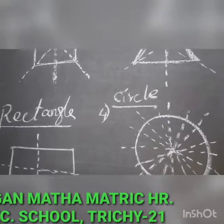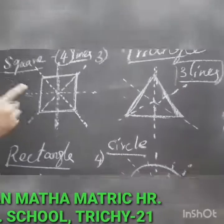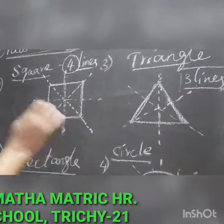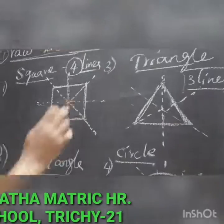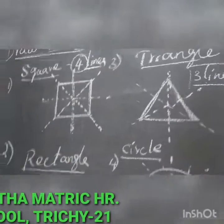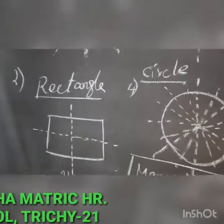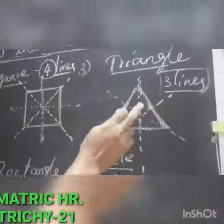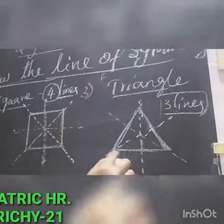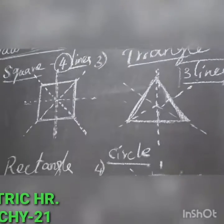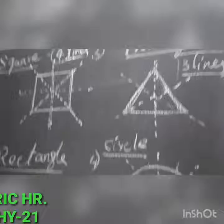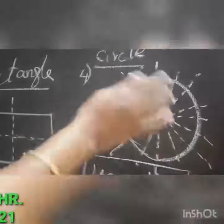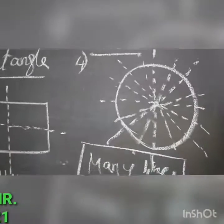To summarize: for a square, we have four lines of symmetry. For a rectangle, we have only two lines of symmetry. For an equilateral triangle, all three sides are equal so we have three lines of symmetry. For a circle, we can fold it many times, so we have many lines of symmetry.